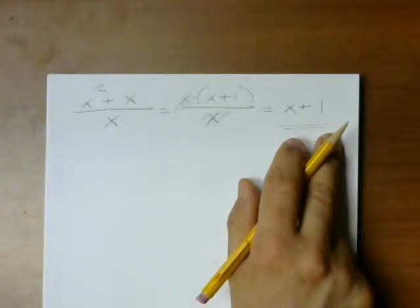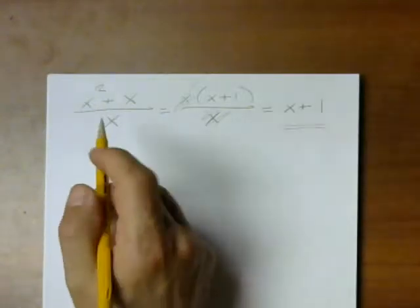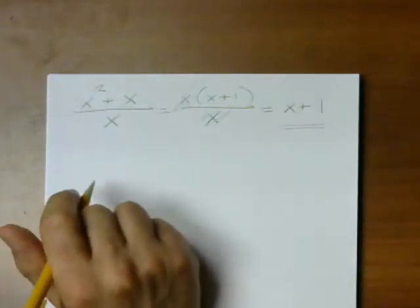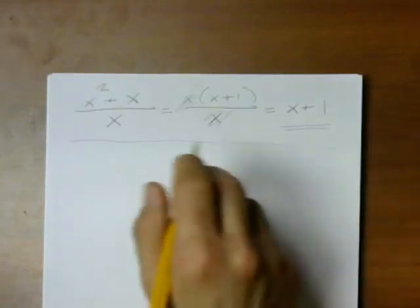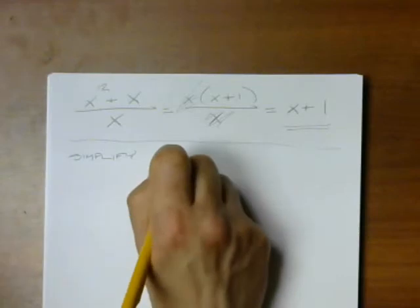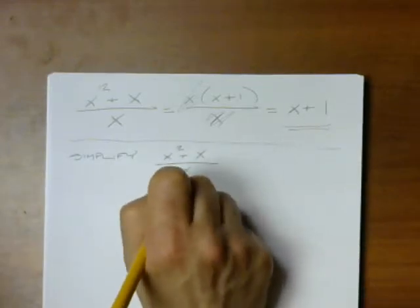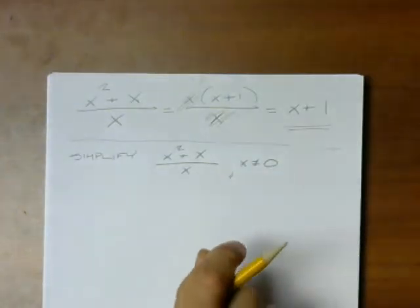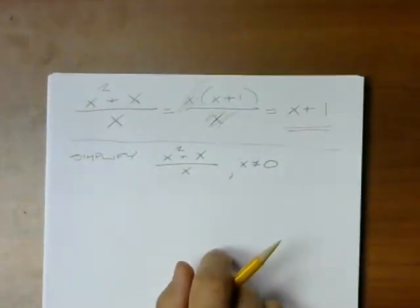So, what do I need to know? Well, if someone were to say simplify this, I could say this is equal to this for all numbers except for 0. But what you might see more likely is something like this. Simplify x squared plus x over x with a constraint. They will tell you that x is not equal to 0. And why will they tell you that?